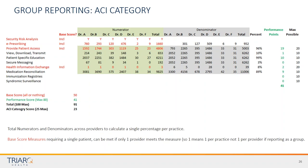This spreadsheet shows ACI group reporting: each measure listed (with base score measures in red), numerators and denominators for each doctor, and a total. The percentage is total numerator divided by total denominator, translating into performance points. With at least one doctor meeting each of the four base scores, we get our 50 base points. Performance points total 41, giving us 91 out of 100, which translates to 23 out of 25 points toward the MIPS composite score.